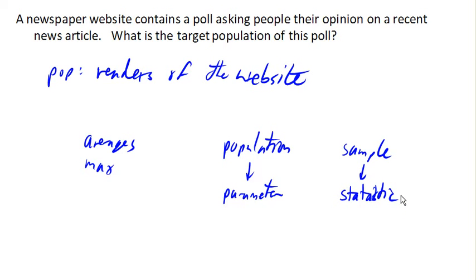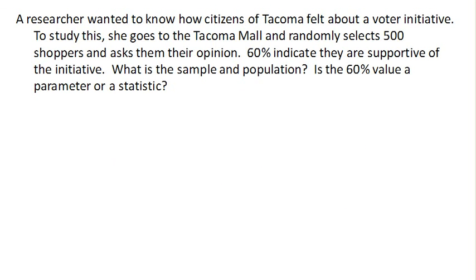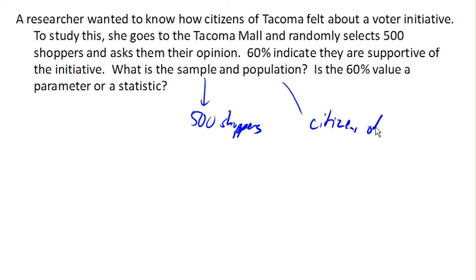Suppose a researcher wanted to know how citizens of Tacoma felt about a voter initiative, so they go to the Tacoma Mall and randomly select 500 shoppers and ask their opinion. 60% indicate that they're supportive. What is the sample and population? Our sample is the 500 shoppers. The population ideally is citizens of Tacoma, but more realistically it's probably mall shoppers, which may not be representative of all of the population. The 60% value came from our sample, and so it is a statistic, not a parameter, because that value comes from the sample.